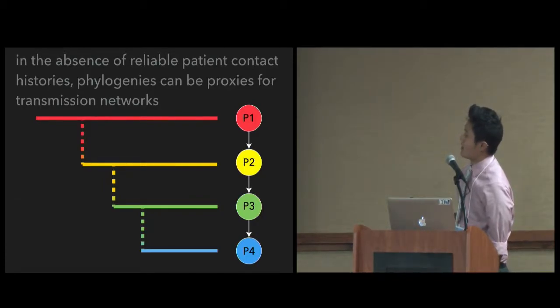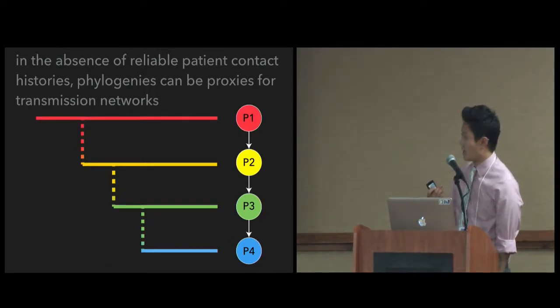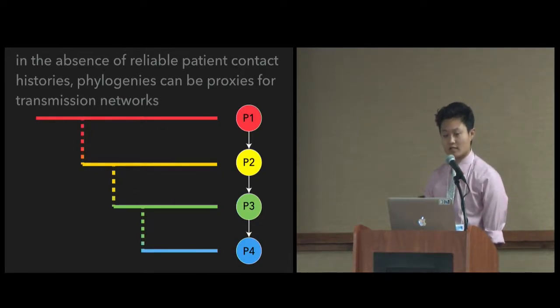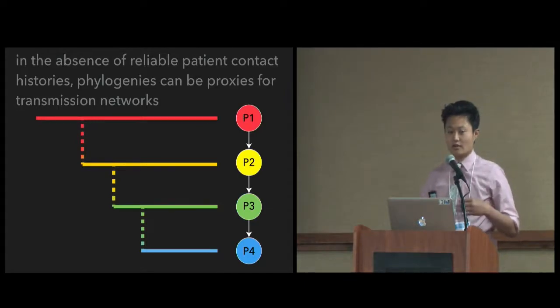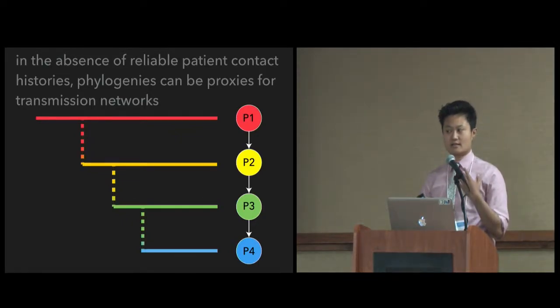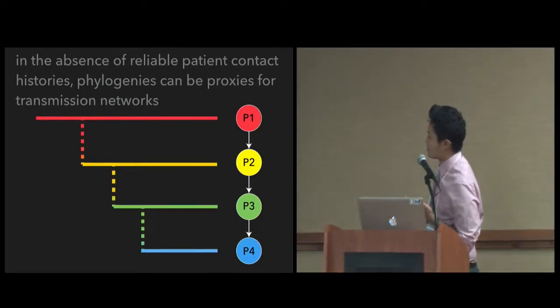In the absence of reliable patient contact histories, phylogenies can be proxies for transmission networks. Clinicians are generally interested in transmission networks and transmission events in history for both prevention and treatment reasons. But you have to generally get patient contact histories in order to actually know the transmission history. And those patient contact histories, either people don't want to give them or they can be unreliable, especially in stigmatized diseases like HIV. So in the absence of that, we can actually use phylogenies to represent these networks.